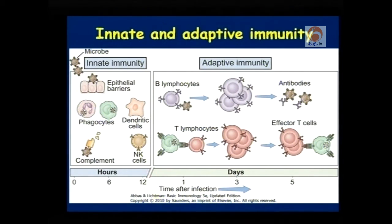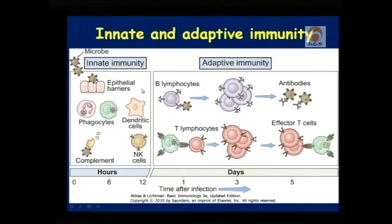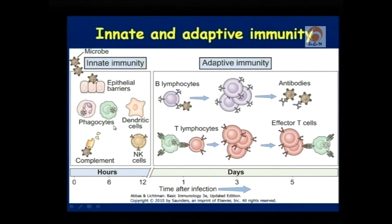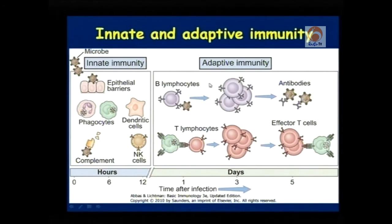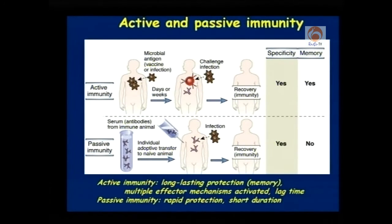Acquired immunity is adaptive as mentioned previously. In innate immunity, the different types of cells involved are epithelial barriers, phagocytes and dendritic cells, natural killer cells, and complement proteins. In adaptive immunity, various populations of lymphocytes are involved, and the mechanisms we will see a bit later on. Immunity is said to be active and passive as a further discrimination.